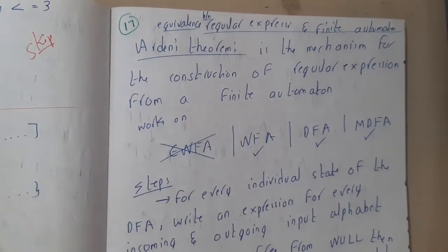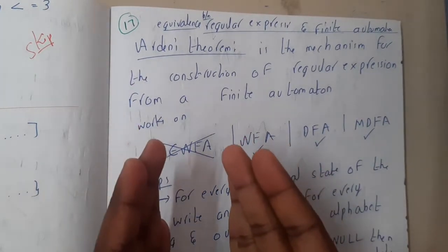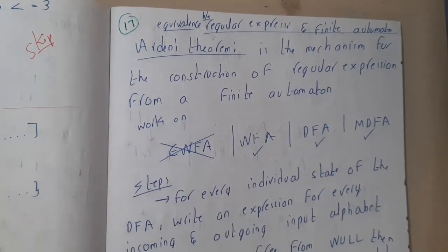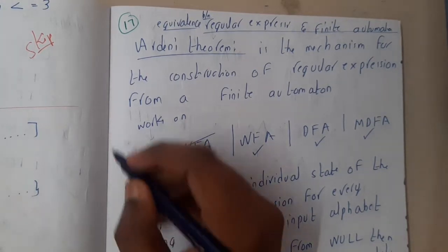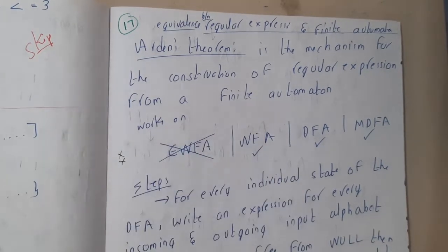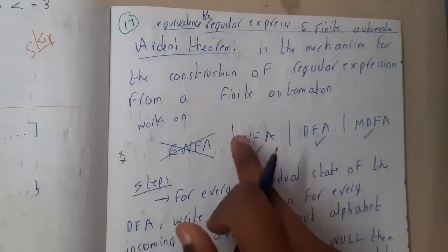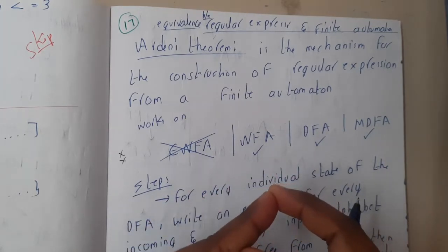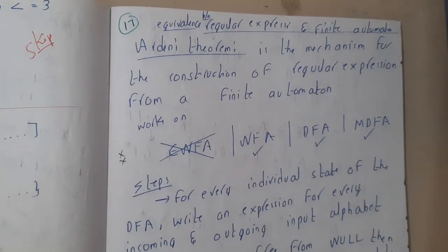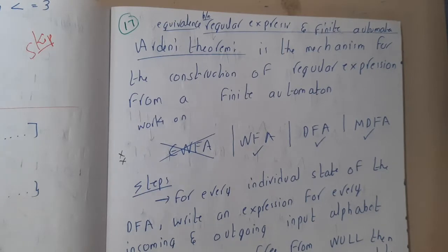Hello guys, we are back with our next lecture. In this lecture, let us go through the next topic — conversion of a finite automata to regular expression. There is a particular theorem or approach to solve this, but the reality is there is no need of any method, because just by observing the question you can answer it under one minute. If you apply this approach, it will take around two to three minutes for a simple question.